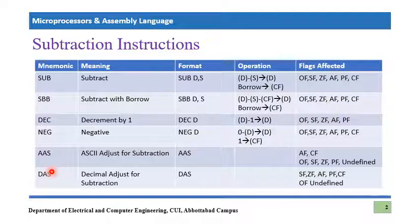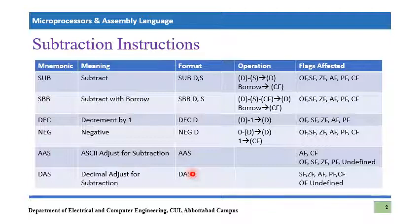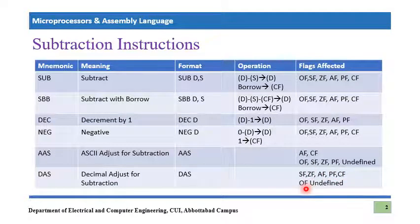The last subtraction instruction is DAS — decimal adjustment for subtraction. The format is simply DAS, and it is used whenever you are performing BCD subtraction. If you are subtracting a BCD number using hexadecimal, your result may require certain adjustment, and that adjustment can be performed using this DAS command. There are a number of flags which can be affected, and some flags are undefined. I hope these instructions are clear — let's proceed to the emulator so we can see their effects in real time.